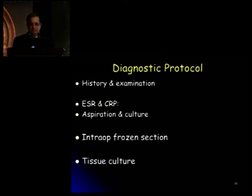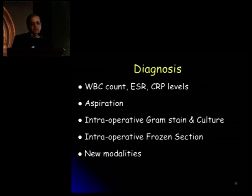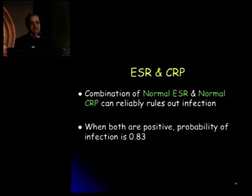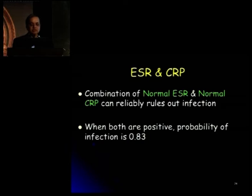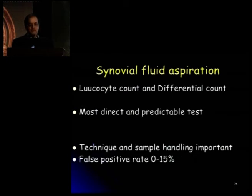There are newer diagnostic modalities I'll be touching upon shortly. Clinical examination of these patients may or may not reveal inflamed joints. A combined normal CRP and ESR reliably rules out infection — several papers have come out suggesting this. But when both are positive, the probability of infection is very high, as high as almost 83%. Isotope scans are virtually given up today — nobody uses them anymore because they're costly, time-consuming, and not reliable. The next step, if ESR and CRP are positive, is synovial fluid aspiration.